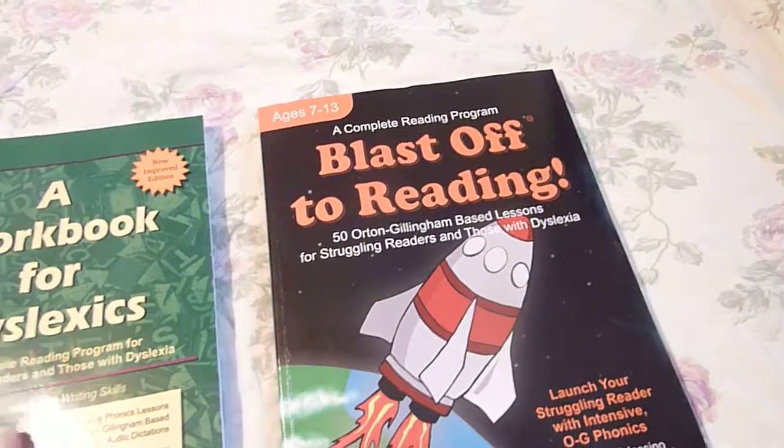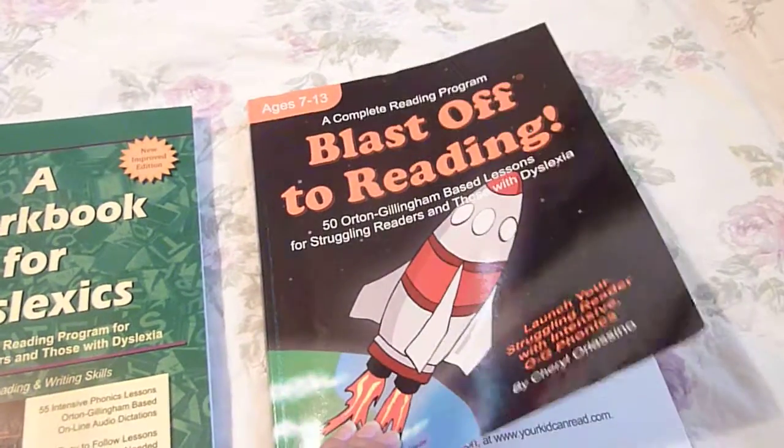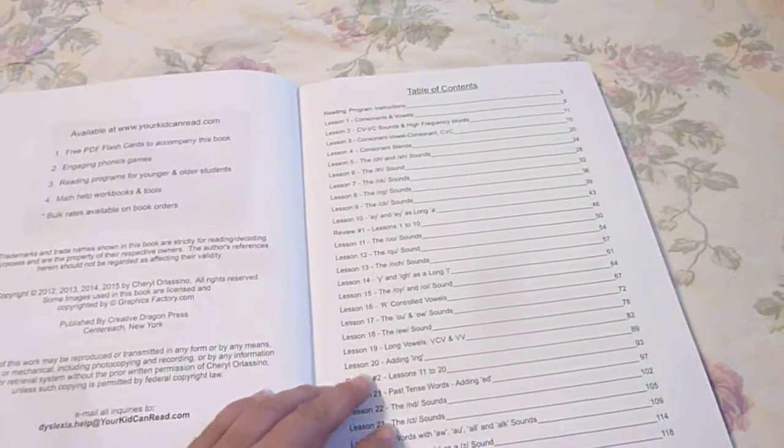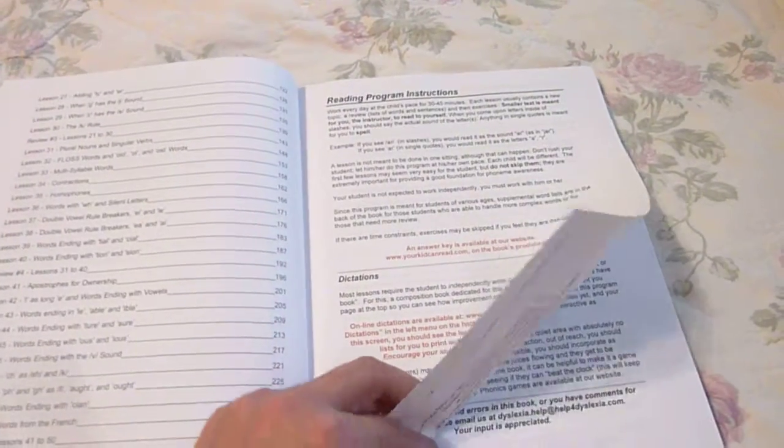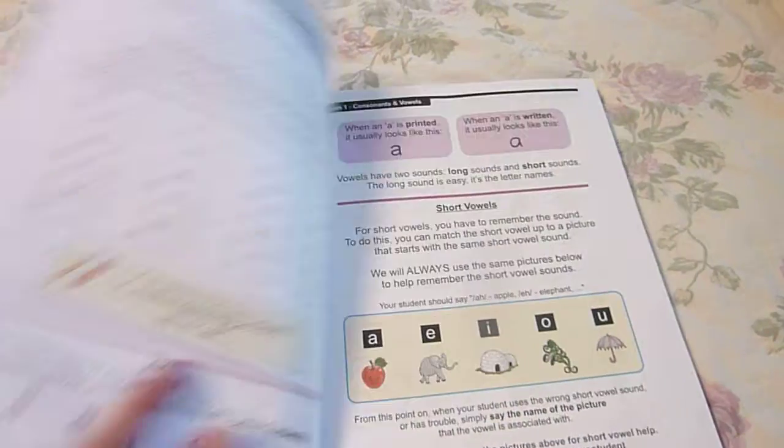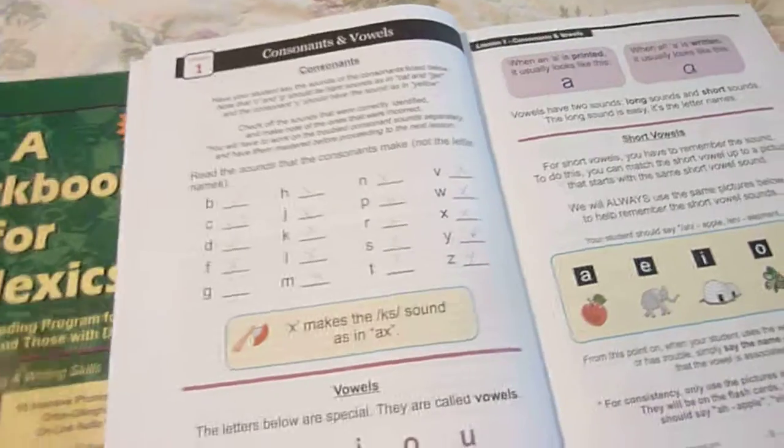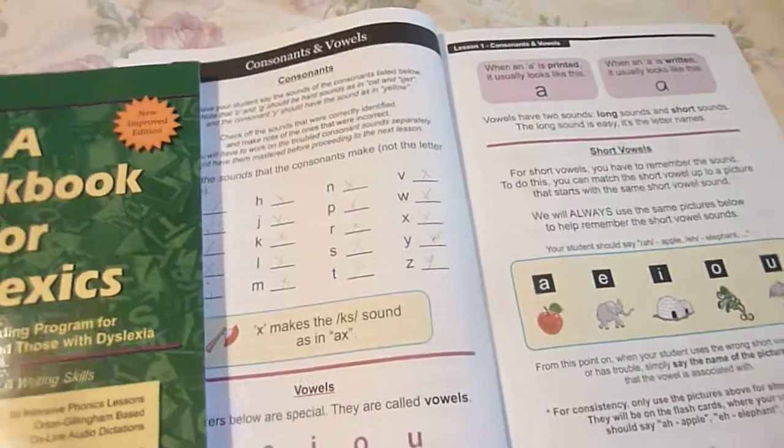yourchildcanread.com, and I'm going to go ahead and go through the first five lessons. You can also see the first five lessons at your kid can read.com, but I'm going to compare these two and I'm only going to go up to the fifth lesson because that's what they have on the site.